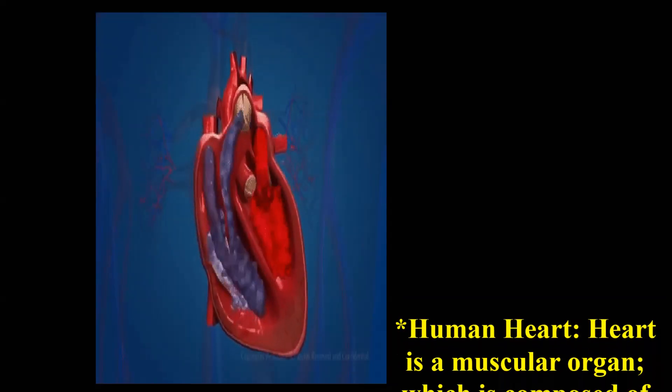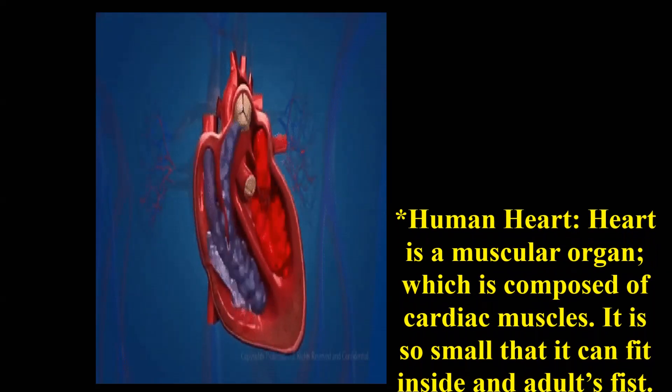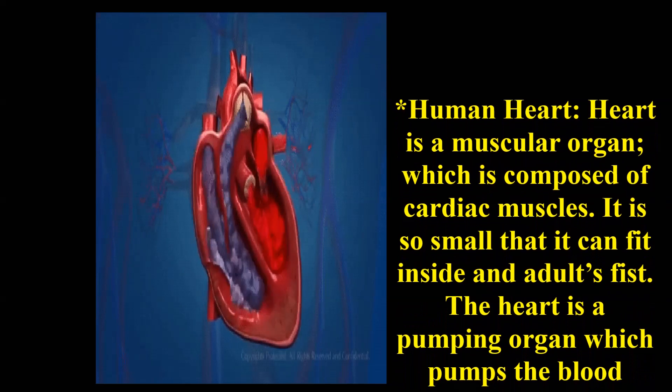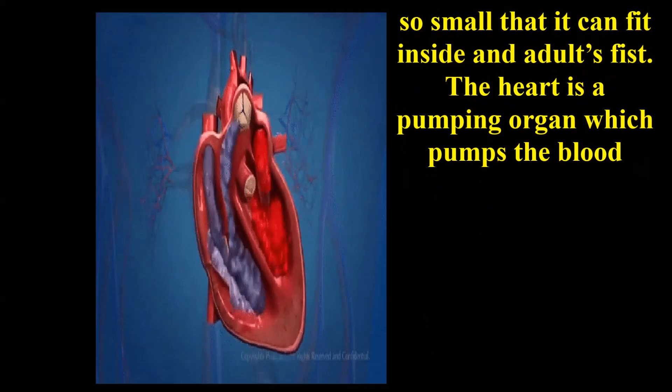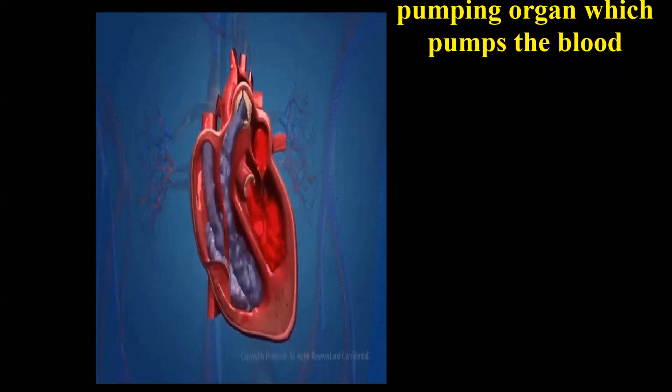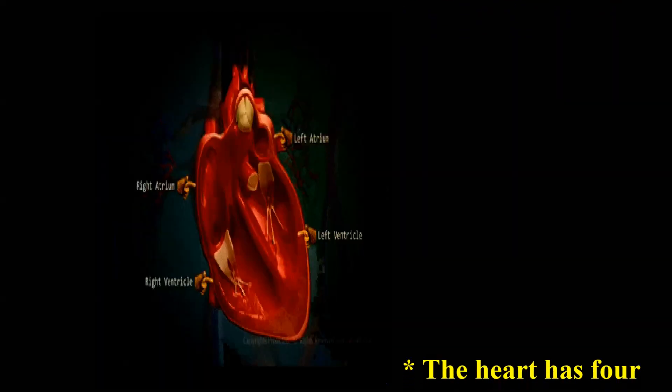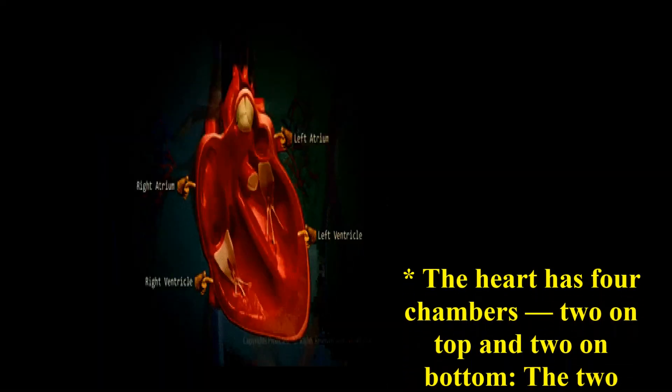The heart is a muscular organ composed of cardiac muscles. It is so small that it can fit inside an adult's fist. The heart is a pumping organ which pumps the blood. The heart has four chambers, two on top and two on bottom.